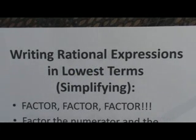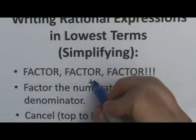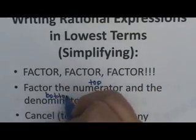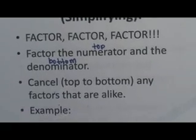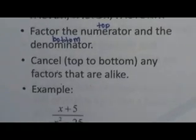Now that we know what a rational expression is, let's talk about writing them in lowest terms or just simplifying them. The biggest thing to remember here is to factor. You're really going to need to use your factoring skills to simplify here. Factor everything. Factor the numerator and the denominator. Remember, the numerator is that stuff on top, and the denominator is that stuff on the bottom. Factor both of those, and then cancel, top to bottom, any factors that are alike.